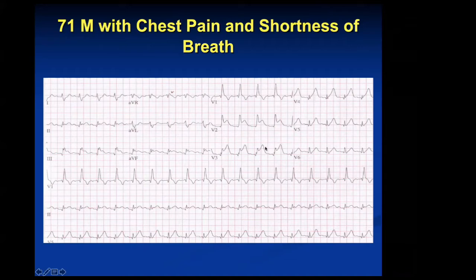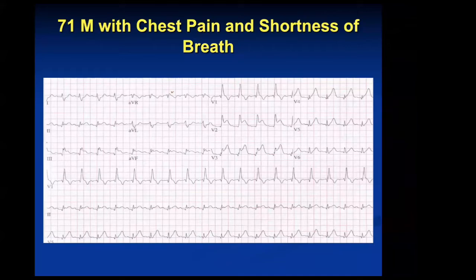So what territory would this be encompassing? Someone in the chat says LAD — that's right. That is LAD. Now what area would be represented by leads 2, 3, and AVF? There are ST elevations there as well. After establishing your isoelectric baseline, you can see those clear ST elevations in these three leads. Someone says inferior RCA — good job. That's exactly right.